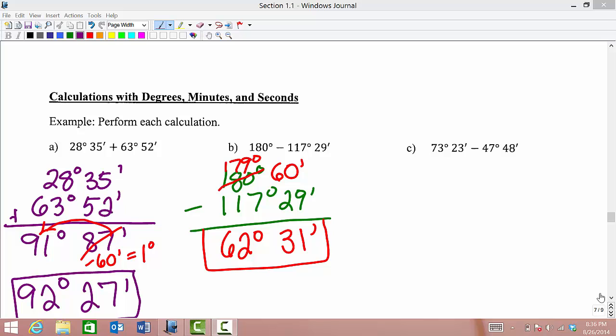73 degrees 23 minutes minus 47 degrees and 48 minutes. Let's line up our degrees and our minutes, one on top of the other. And we want to subtract—we have 23 minus 48.